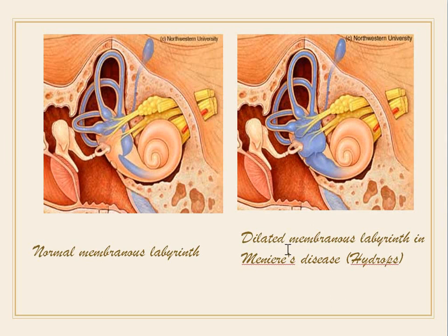Here you can see the normal membranous labyrinth. Now you can see the dilated membranous labyrinth because fluid has filled it. There is either a problem with absorption or overproduction of endolymph, resulting in a dilated membranous labyrinth.